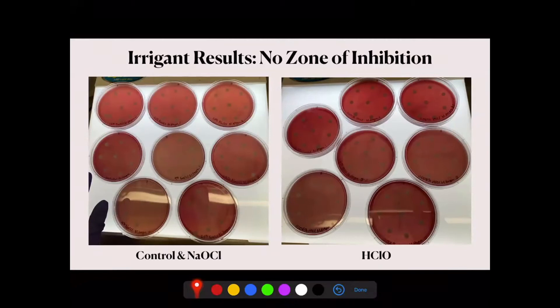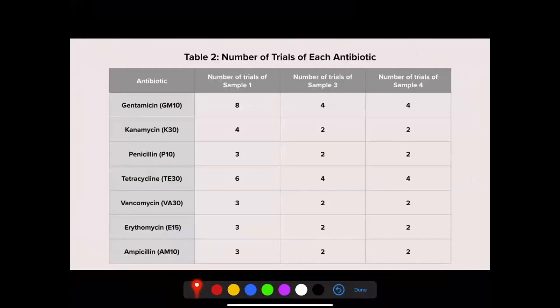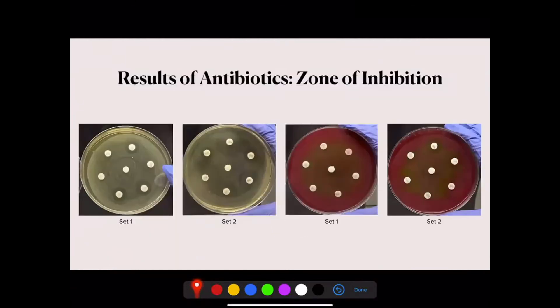Table two shows the number of trials performed for each antibiotic. A total of 57 trials were performed using two sets of antibiotics. When antibiotics were used as irrigants, both clear and faint zones were shown, but this varied from sample to sample. Since I tested a community of bacteria, the faintness of the zone could be because the antibiotic was able to kill some species, creating the ring, while the remaining species remained on the ring, making it less visible.